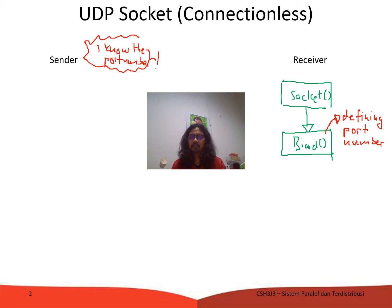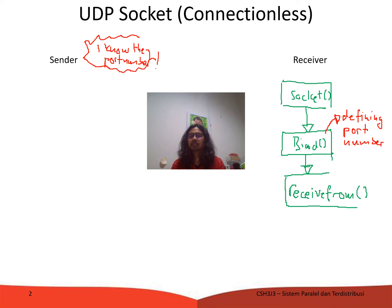The next process is receiving. Before any data is sent, the receiver has to be ready to receive — that's the logic. It calls receive-from, because it receives a message from a certain party. Here it blocks and remains blocked until the data is sent.